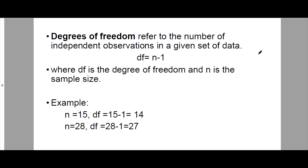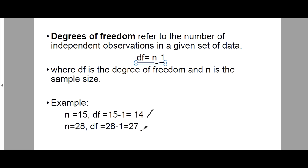What is degrees of freedom? It refers to the number of independent observations in a given set of data. We find it using the formula: df equals n minus 1, where df is the degree of freedom and n is the sample size. For example, if n is 15, the degrees of freedom is 14. If n is 28, the degrees of freedom is 28 minus 1, which is 27.